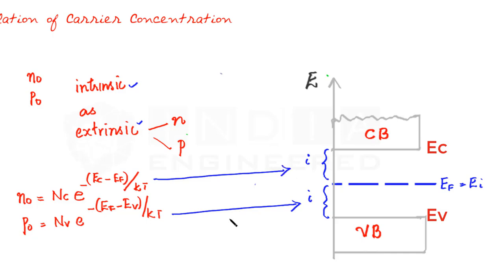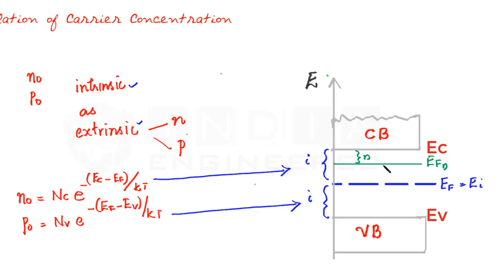In N-type material, the Fermi level will be closer to the conduction band. This is our Fermi level in N-type material. We can see that the term EC minus EF has reduced. This is EC minus EF for N-type material, and at the same time, EF minus EV has increased. That's for N-type material.